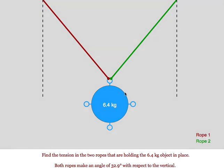If we have a series of ropes and the two ropes are both at the same angle, solving for the tension in the ropes is quite easy.